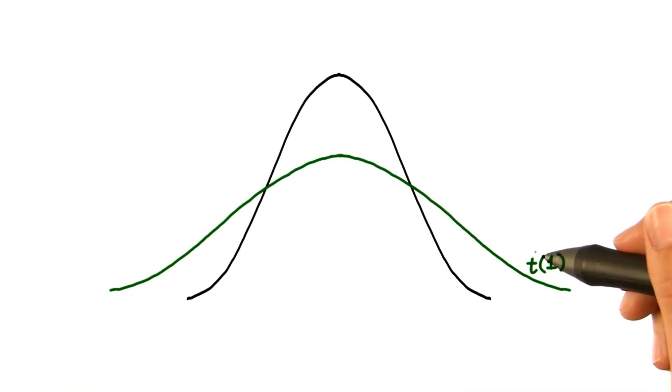As the degrees of freedom increases, the t distribution better approximates the normal distribution.